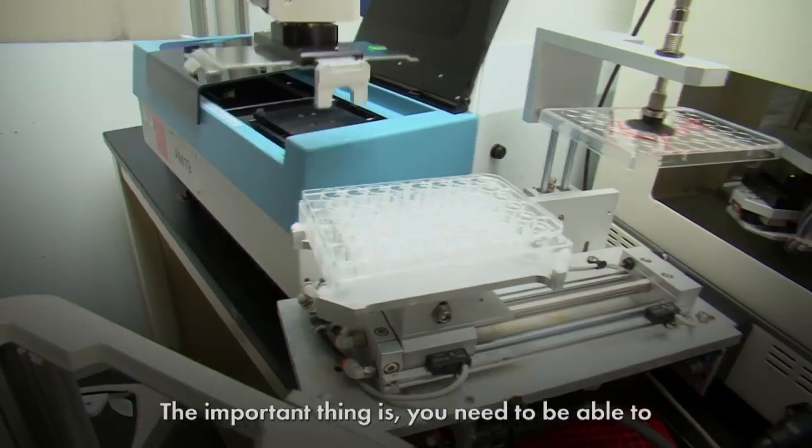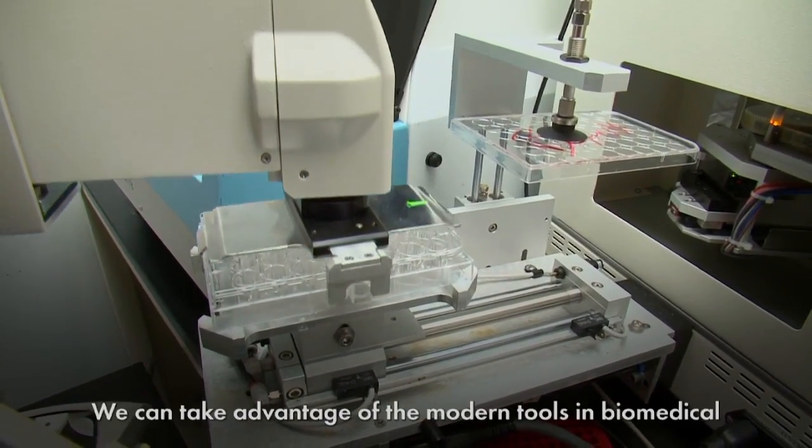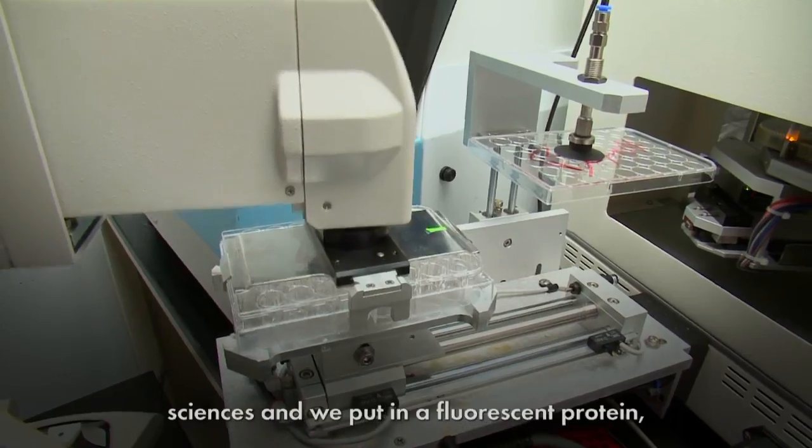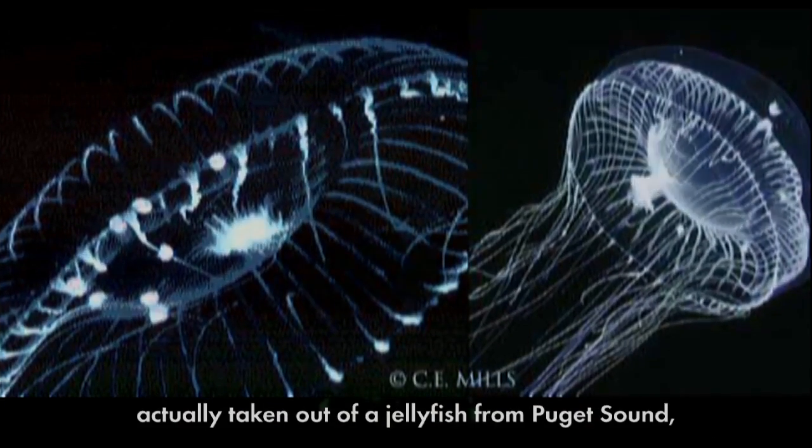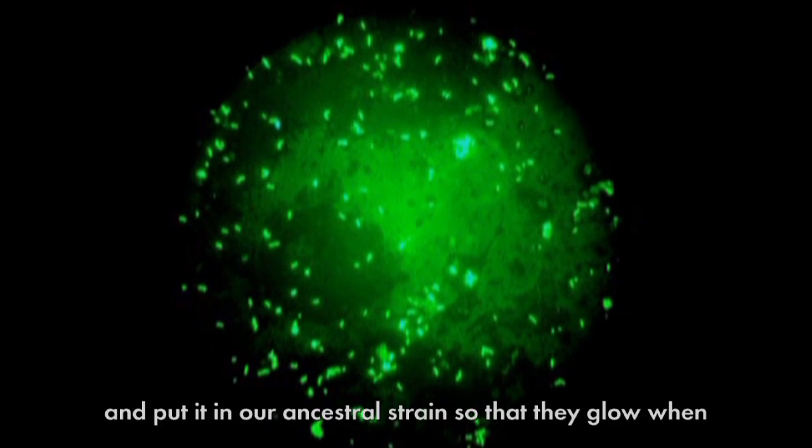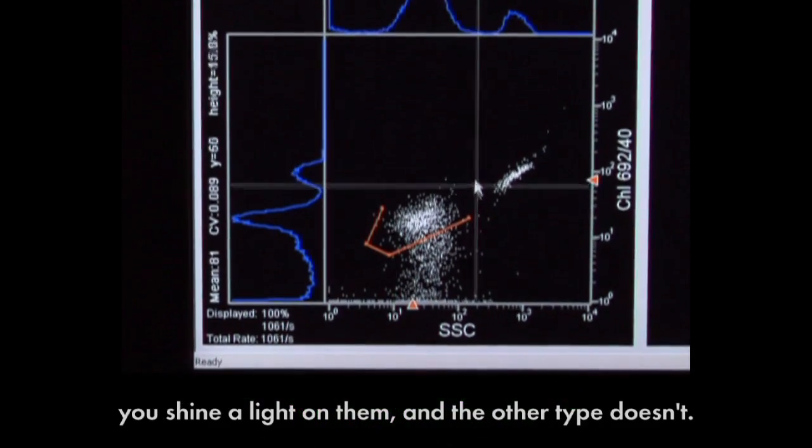The important thing is you need to be able to distinguish the two different types. We can take advantage of the modern tools in biomedical sciences and we put in a fluorescent protein actually taken out of a jellyfish from Puget Sound and put it in our ancestral strain so that they glow when you shine a light on them and the other type doesn't.